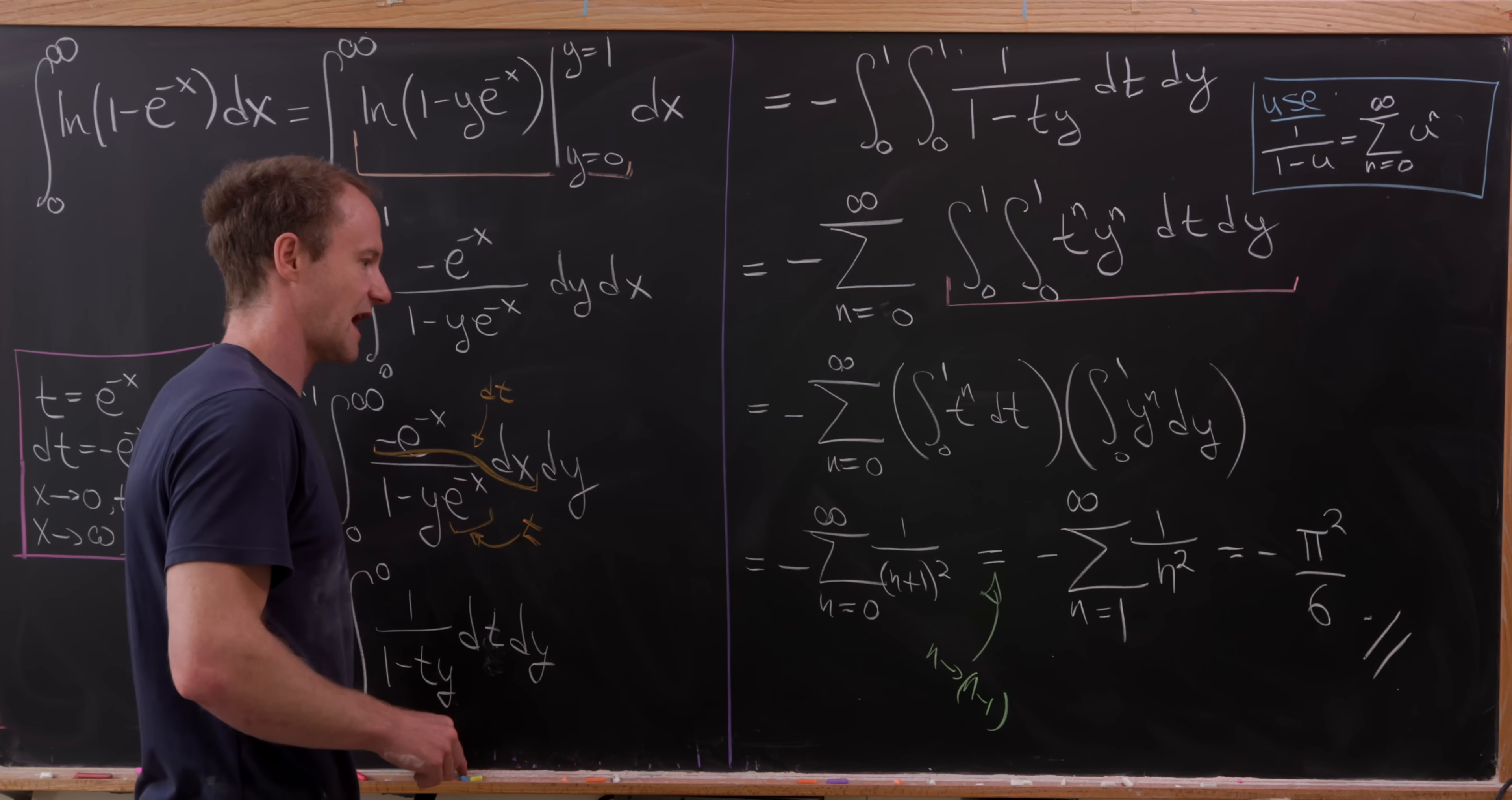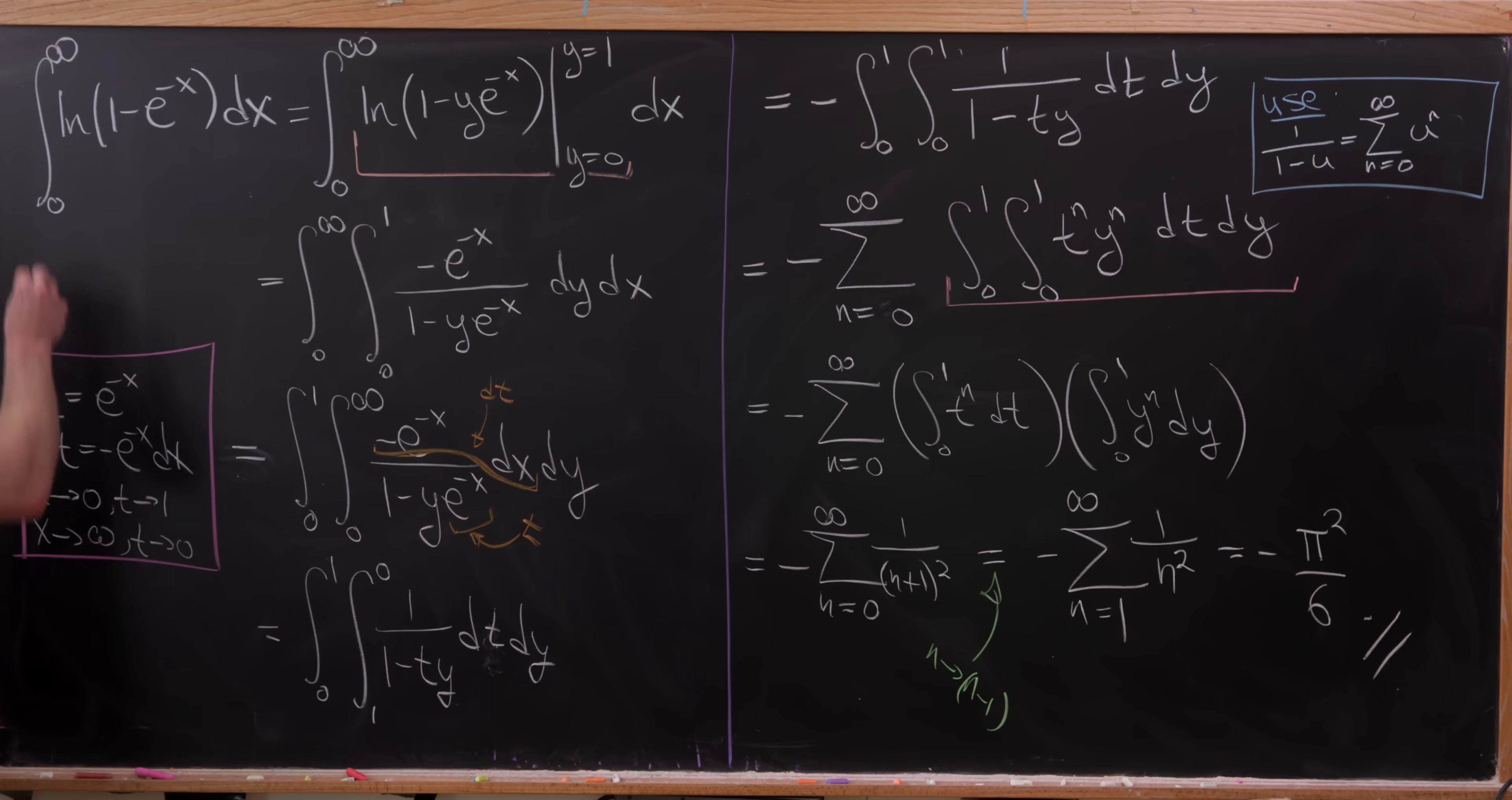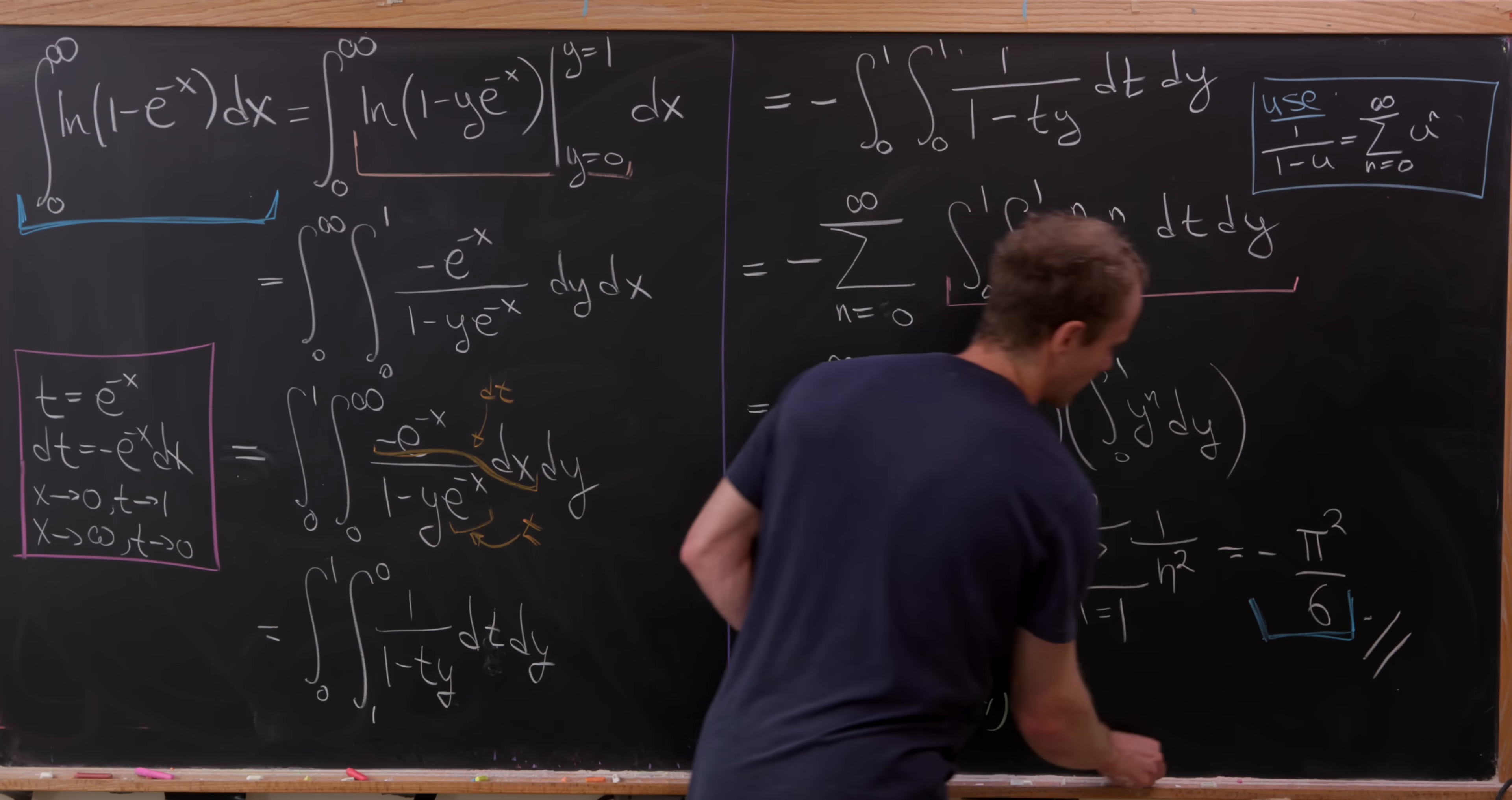But since this is attached to a minus sign, that means the value of our original integral right here is, in fact, negative pi squared over six.